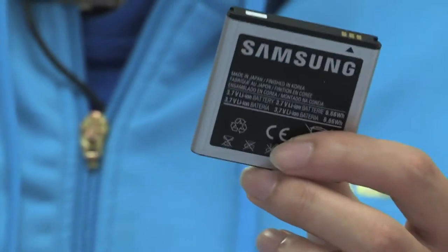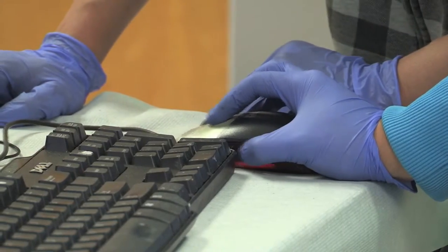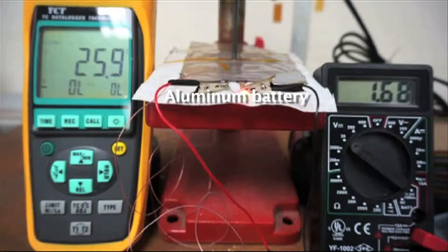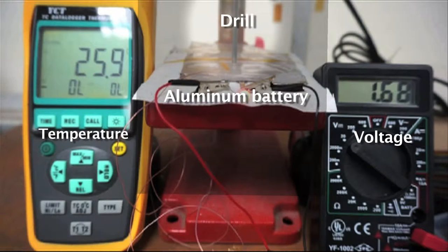This is a lithium-ion battery which we use a lot in our daily lives, for example in our cell phones and laptops. Commonly, if you drill a hole through a lithium-ion battery it will probably catch on fire, but our aluminum battery is non-flammable. So if you drill a hole through it, it's still running for a while.